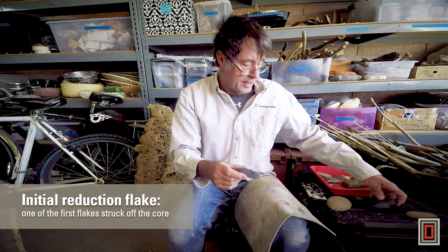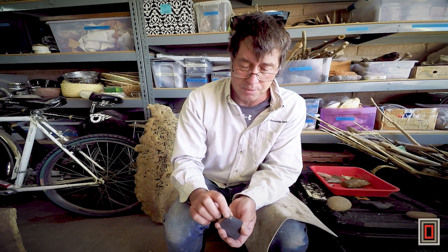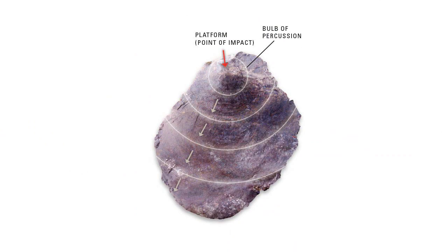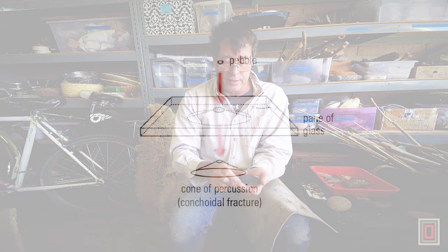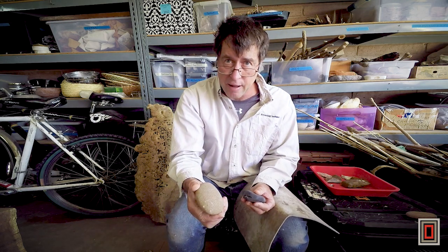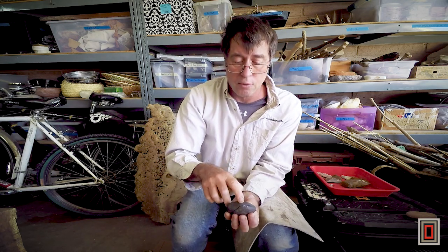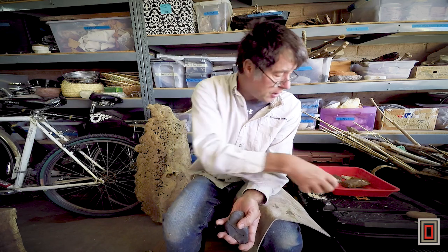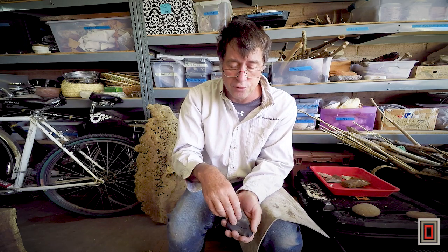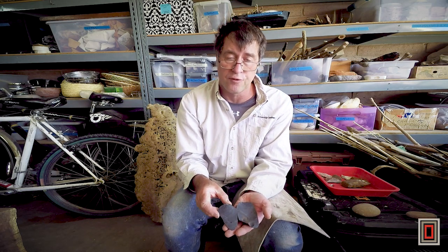All flakes have certain attributes. They have a flat spot — this flat spot right here we call the platform. This is where I hit it and struck it in order to knock the flake off. A flake is a cone. If you've ever seen a window hit by a BB and a cone pops out of it, that's what happened here. I took this cobble and struck it with my sandstone hammerstone. When I hit it, I knocked a wave of energy into the rock — like when you throw a rock in a pond and see the wave travel out. That wave traveled through the rock creating a fracture that broke the flake off.